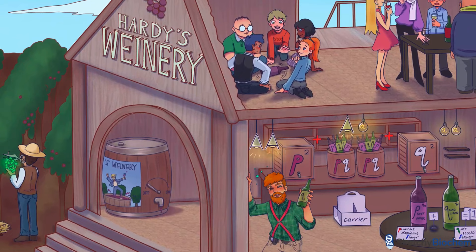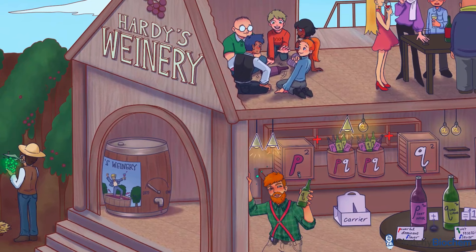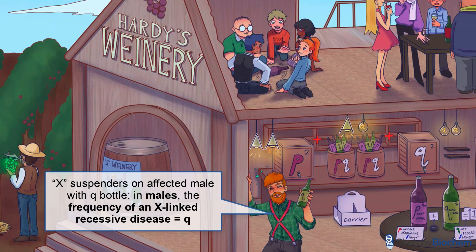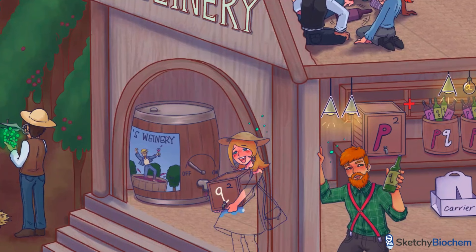In this case, the frequency of an X-linked recessive disease in males is simply Q. A male can't be Q squared — that's why this man was affected by only a single Q wine bottle. Similarly, a male can't be a carrier either; he either expresses the trait if he harbors the recessive allele, or doesn't if he has the dominant allele. No middle ground here. Females, on the other hand, can be homozygous dominant, heterozygous, or homozygous recessive for an X-linked trait since females have two X chromosomes. So the frequency of an X-linked recessive trait in females is Q squared.